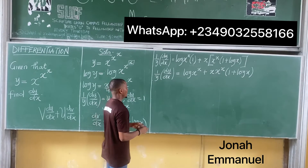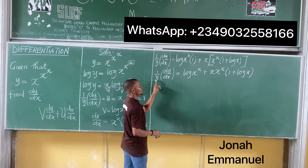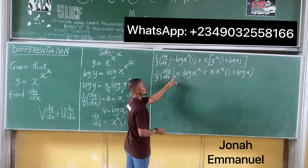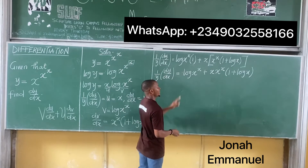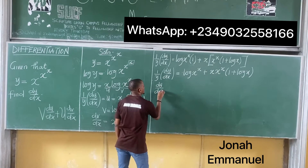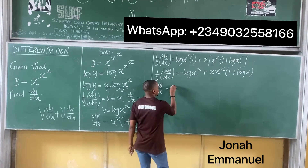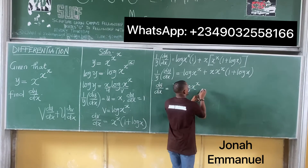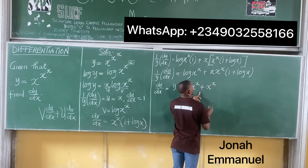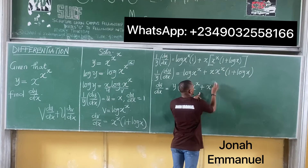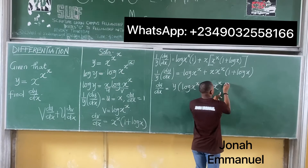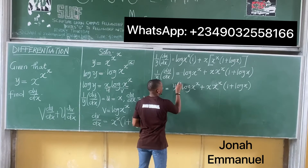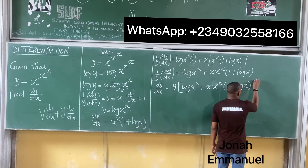Now, since y is on the left side, we multiply both sides by y. So y cancels on the left and comes to the right. We now have dy/dx equal to y times log(x^x) plus x times x^x times (1 + log x).